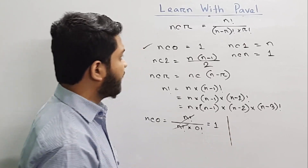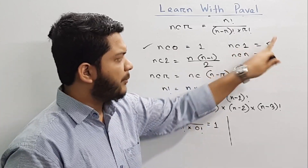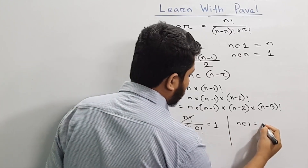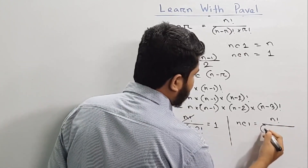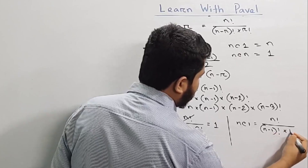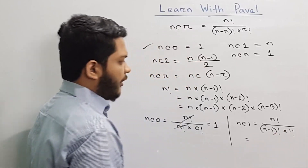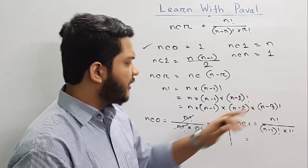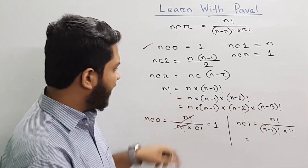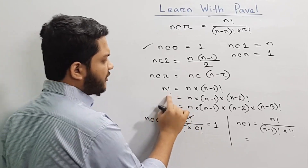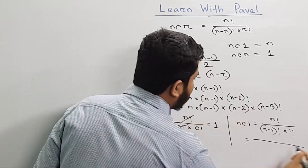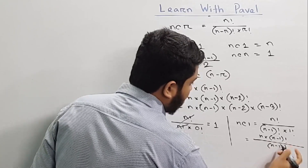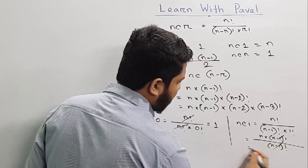Now nC1 — show me n. So nC1 is n factorial divided by n minus 1 factorial into 1 factorial. 1 factorial is 1. Now the n factorial: we can see the n factorial. So n minus 1 factorial cancels with n minus 1 factorial.